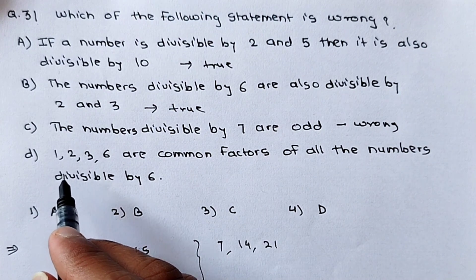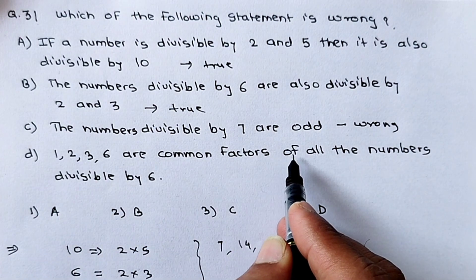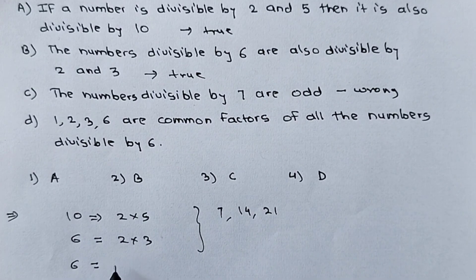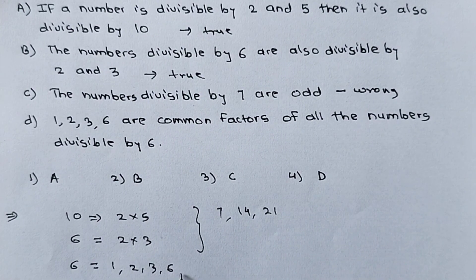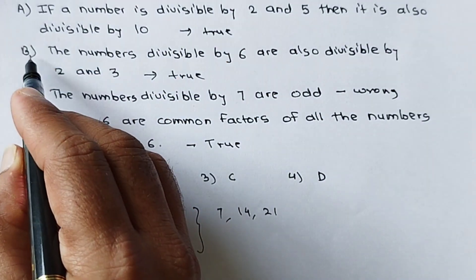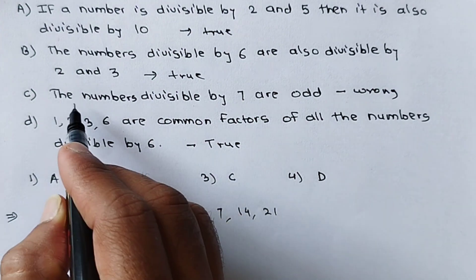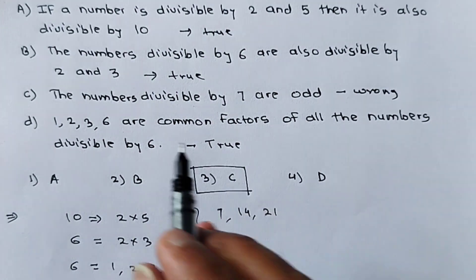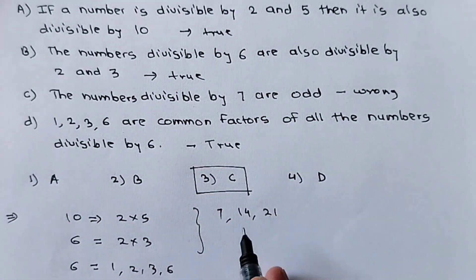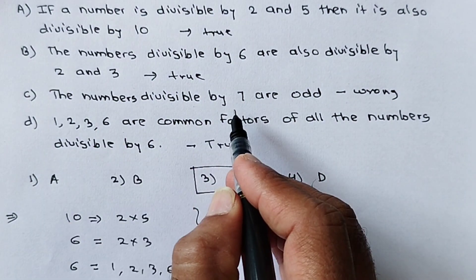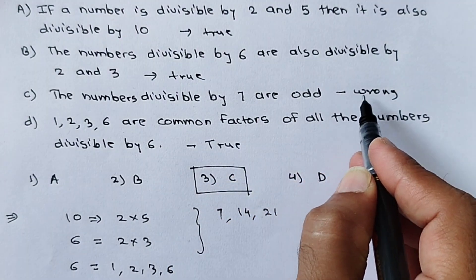Now see the fourth statement: 1, 2, 3, 6 are common factors of all the numbers divisible by 6. The factors of 6 are 1, 2, 3, and 6. So this statement is true. Therefore, first, second, and fourth statements are true. Only the third statement is wrong, so our answer is option C. The third statement — the numbers divisible by 7 are all odd — is wrong because 14 is an even number.